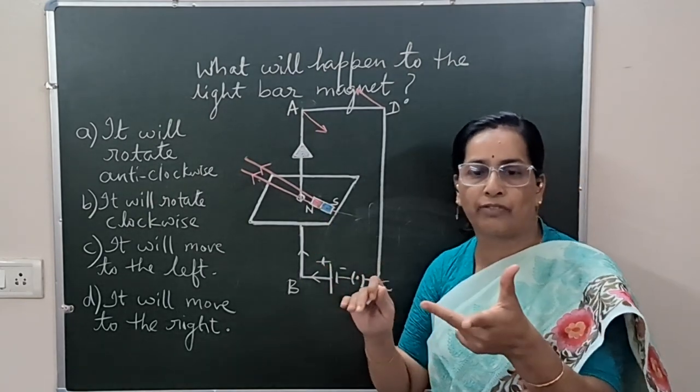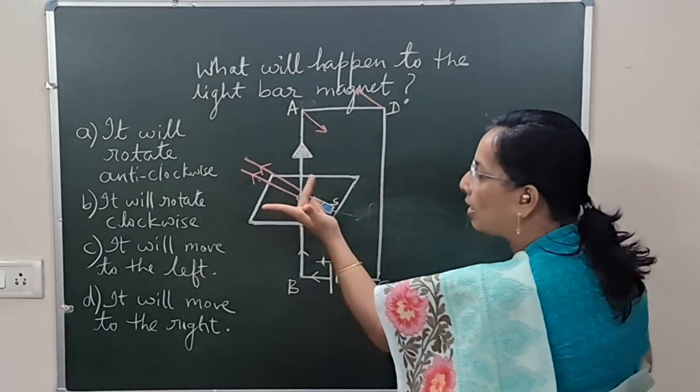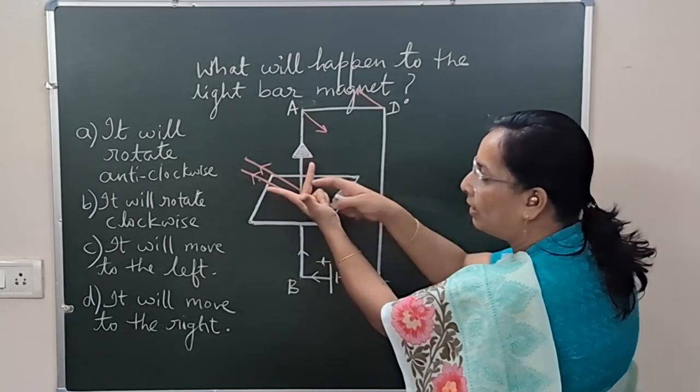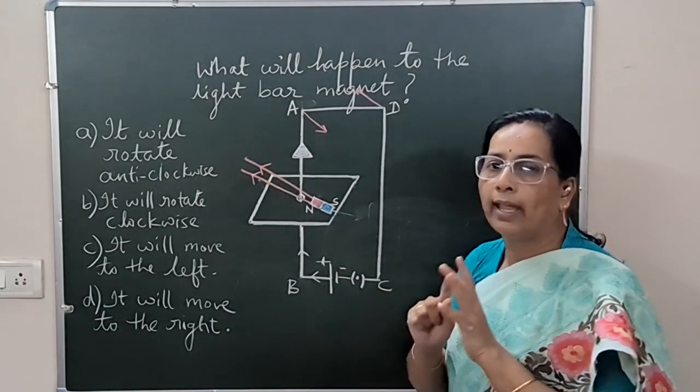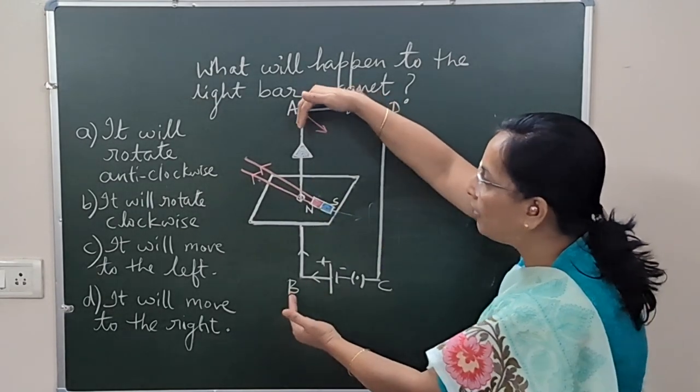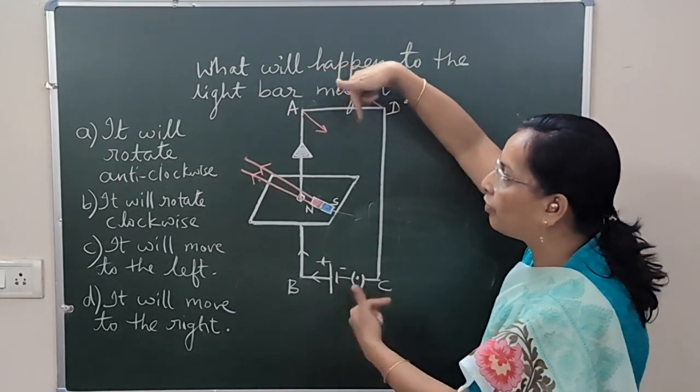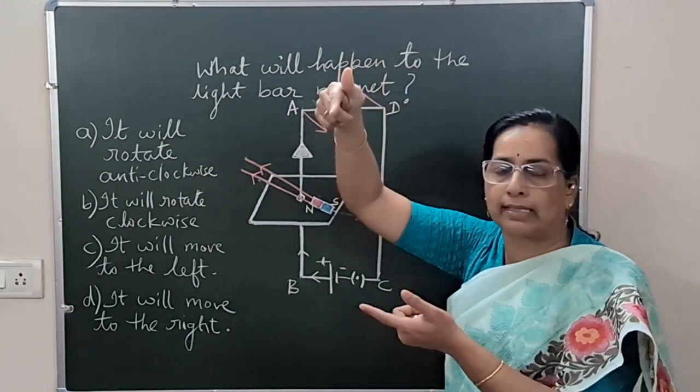So, by applying Fleming's left-hand rule for force, field, and current. I have set the fingers properly: the field direction, the current direction, and the thumb is pointing outward. This means arm AB will move outward and arm CD will move inward if this armature is free to rotate above some axis.